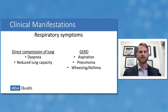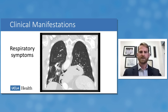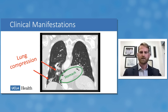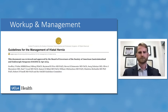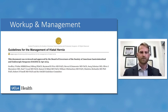Respiratory symptoms can be associated with large hiatal hernias, both from GERD and from direct compression of the lung with loss of pleural volume. This can result in dyspnea and reduced lung capacity on pulmonary function tests. A coronal CT slice shows intrathoracic stomach from a large hiatal hernia in the green circle, and in the right lower lung field there is clear evidence of lung compression with atelectasis and patchy consolidation.